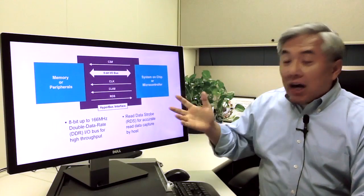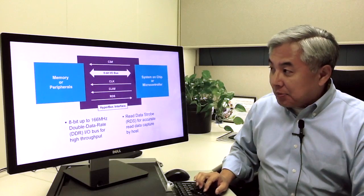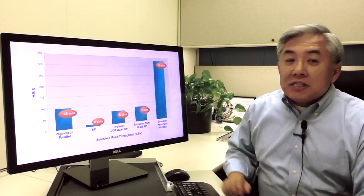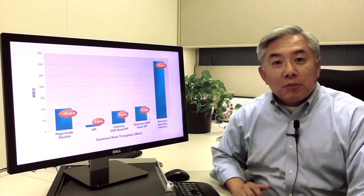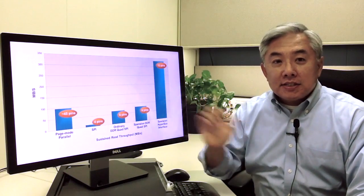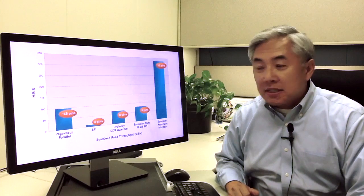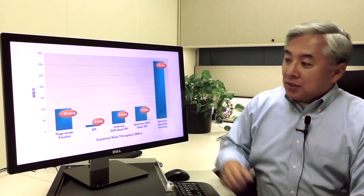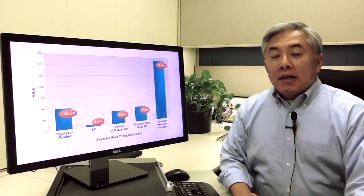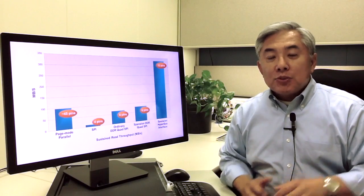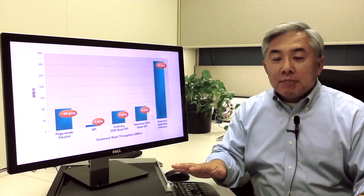And let me talk about the benefits of the HyperBus. What you see here on the x-axis is a category of devices that are in the market today. On the y-axis you see the throughput of these devices in megabytes per second. So at the very left you see the page mode parallel NOR. This is the standard memory bus interface where you have an address bus and a data bus.